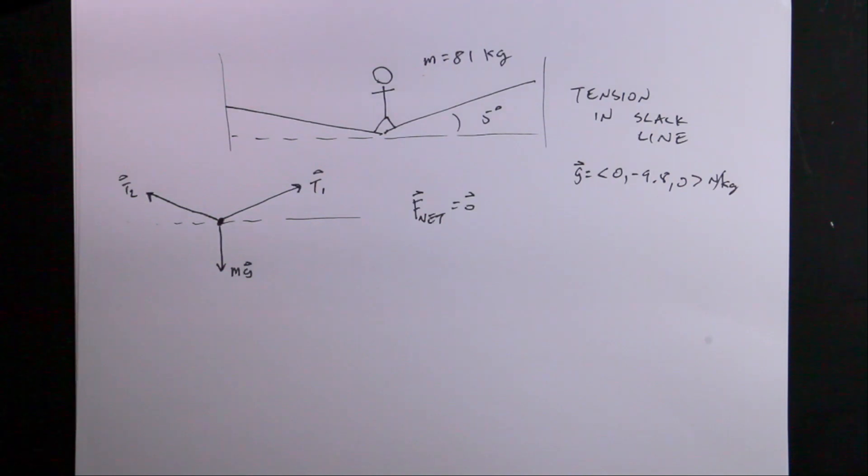Now, what about tension? One of the things about strings and ropes and slack lines is that in an ideal situation where the mass of the rope itself is negligible and there's no frictional forces on the contact point,